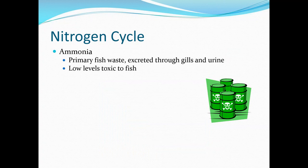First, we start with ammonia — this is the primary fish waste, excreted through the gills and urine. Even though the fish are producing this, very low levels are toxic to fish. High ammonia mostly results in neurologic syndromes including buoyancy disorders, body position disorders, lethargy, inappetence, and death.